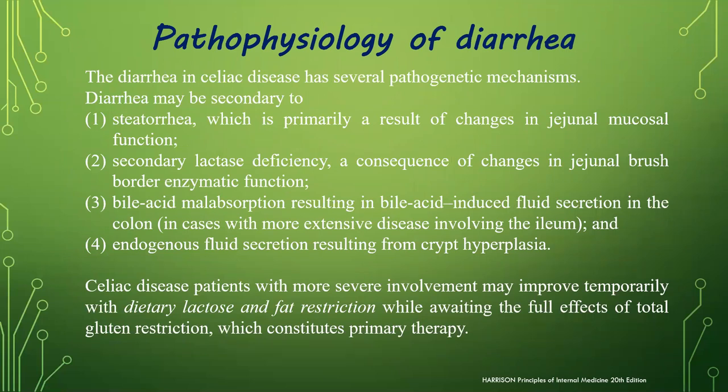Diarrhea in celiac disease has several pathogenetic mechanisms. It may be secondary to steatorrhea, which is primarily a result of changes in jejunal mucosal function. Second, lactase deficiency results from changes in jejunal brush border enzymatic function. Third, bile acid malabsorption results in bile acid-induced fluid secretion in the colon in cases with more extensive disease involving the ileum, and endogenous fluid secretion resulting from crypt hyperplasia.